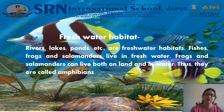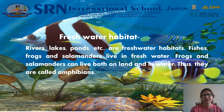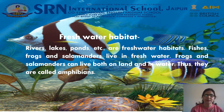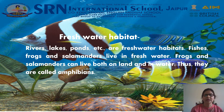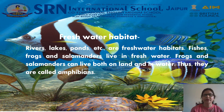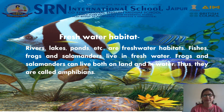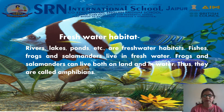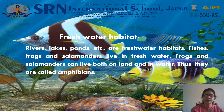Next is freshwater habitat. Rivers, lakes, pools, etc. are freshwater habitats. Fishes, frogs and salamanders live in freshwater. Frogs and salamanders can live both on land and in water. Thus, they are called amphibians.